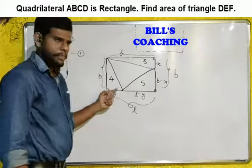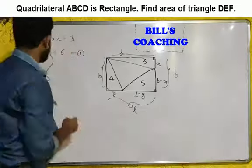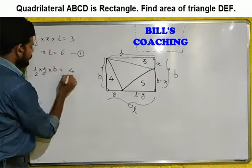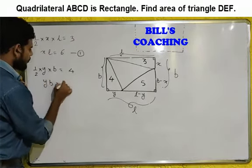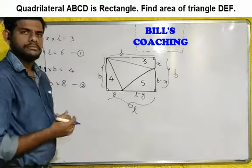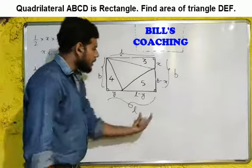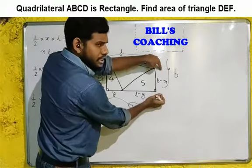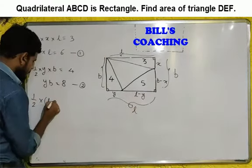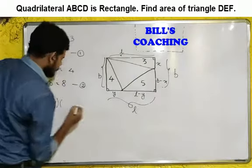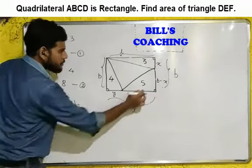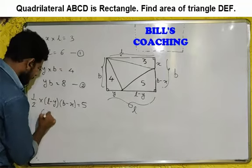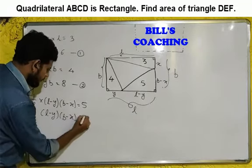For the second triangle, taking the appropriate base and height, half into base into height equals 4, so YB equals 8. That is equation 2. For the third triangle, base is L minus Y and height is B minus X, so half into (L minus Y) into (B minus X) equals 5, giving us (L minus Y)(B minus X) equals 10.